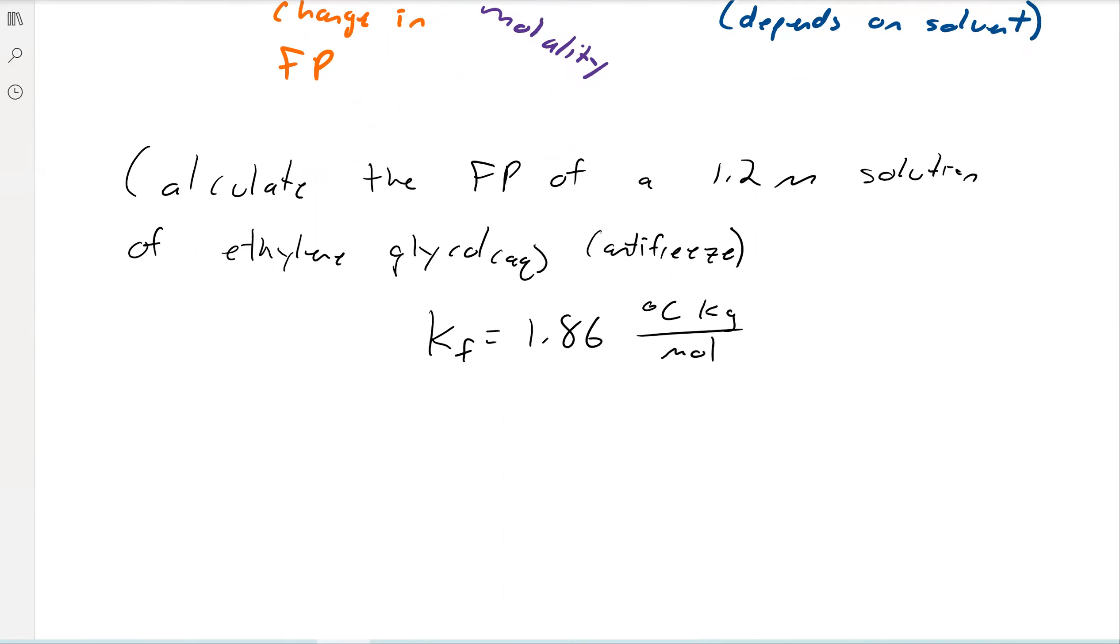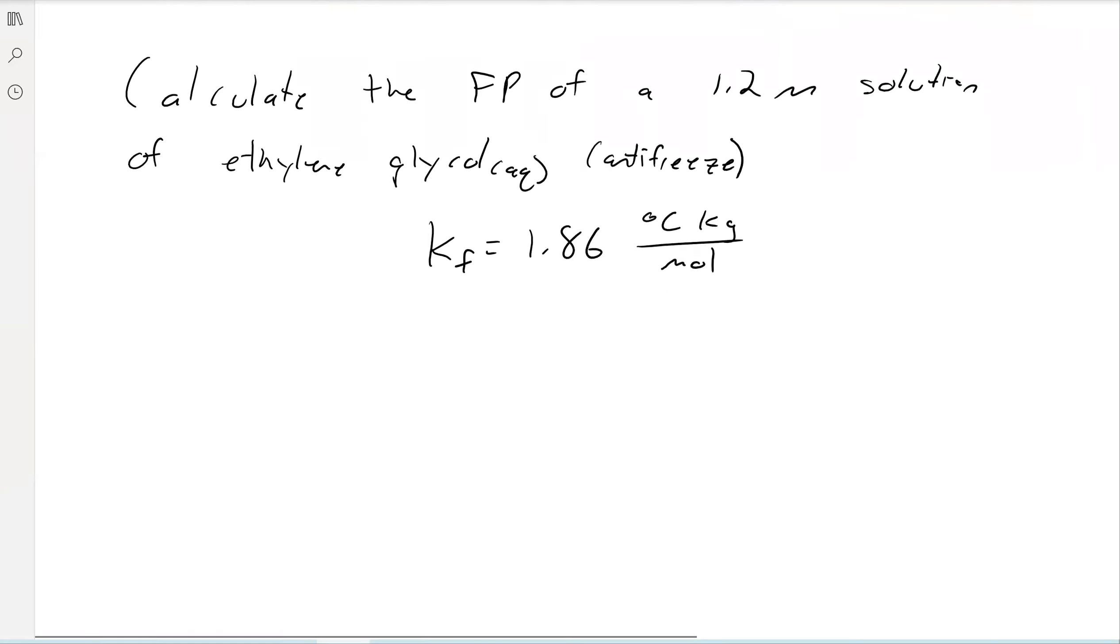And basically what that tells you is that for every one mole solute per kilogram of solvent, you will change the freezing point by 1.86 degrees Celsius. So anyways, we're going to take our equation and plug and chug. So we have the molality, that's going to go in molality. We have K_F, that's going to get plugged into K_F.